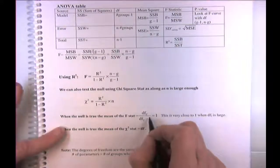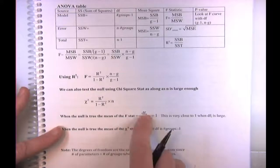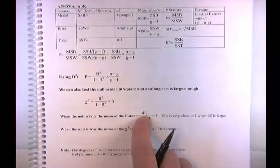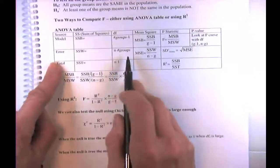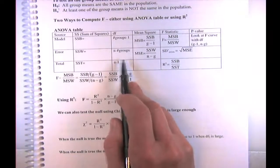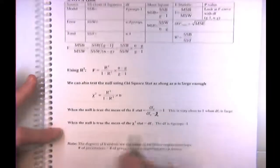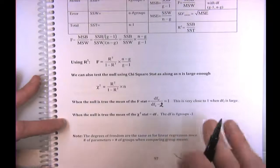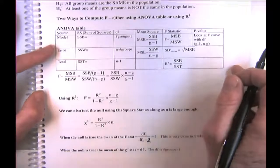When the null is true, the mean of the F-statistic is about one — very close to one when the degrees of freedom in the denominator are large. When the null is true, the mean of the chi-square is centered at its degrees of freedom, which is the number of groups minus one. These ANOVA charts will look familiar because you've been doing them repeatedly.